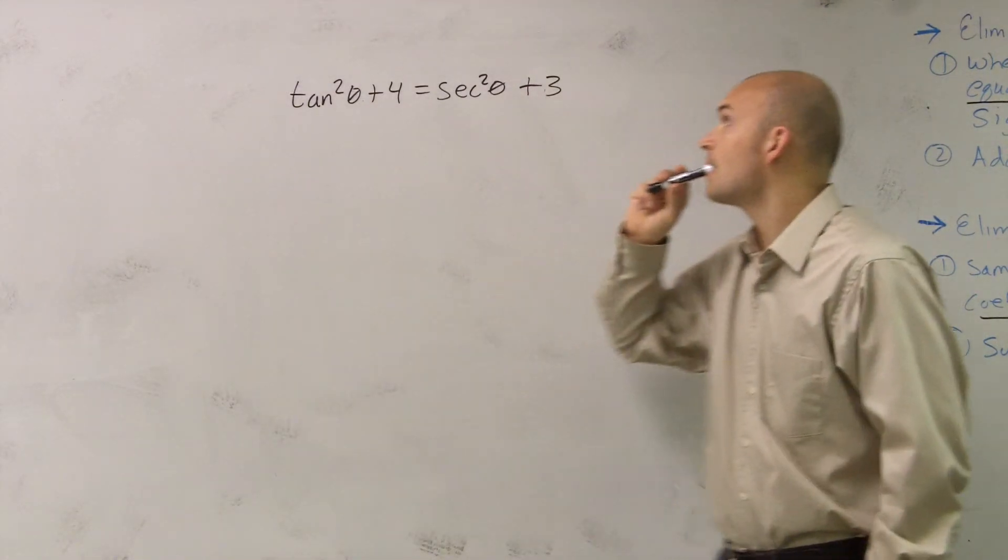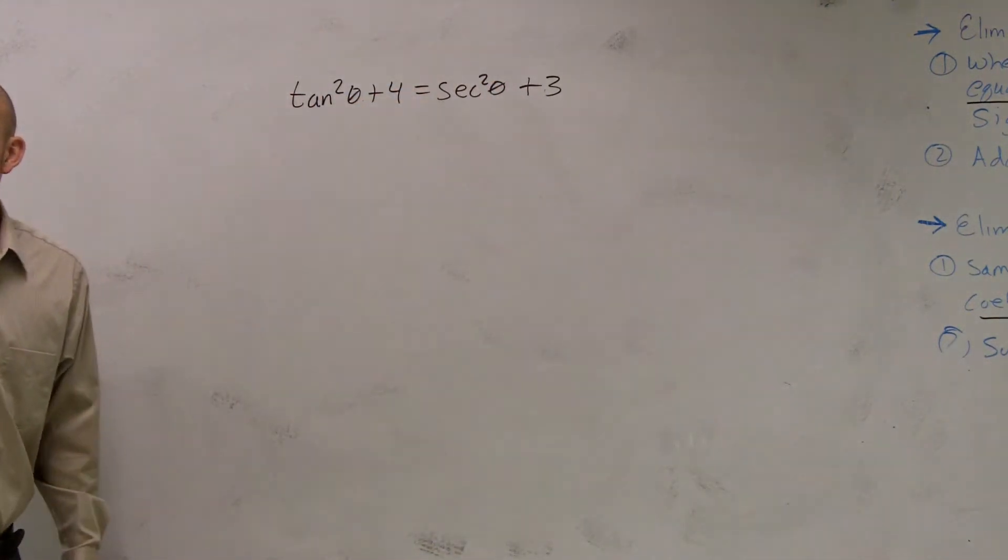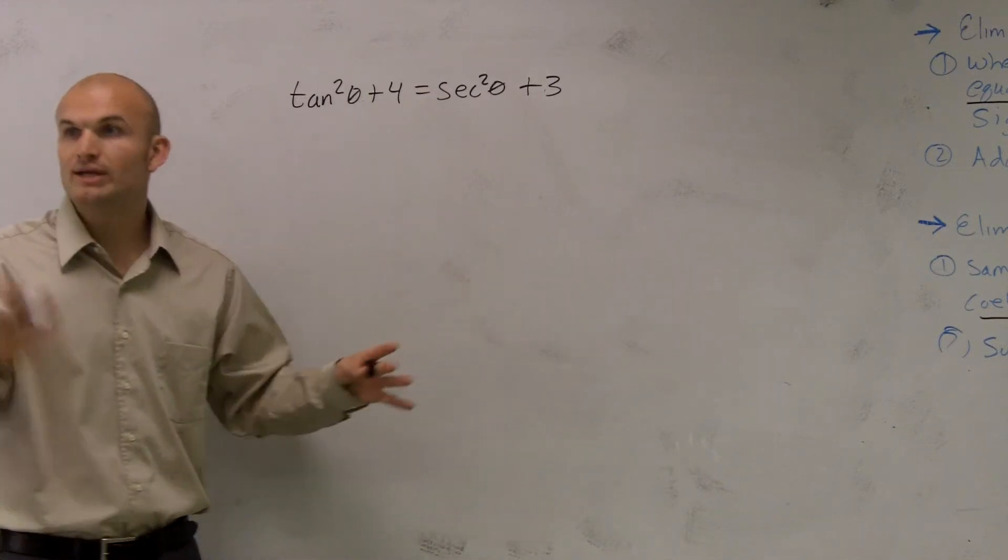The secant squared is 1 plus tan squared. So it's good that you actually automatically visualize it. Some students aren't going to see that. So what I want you to do is just try to put one in there.